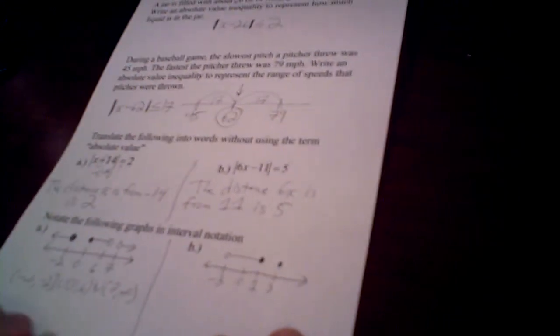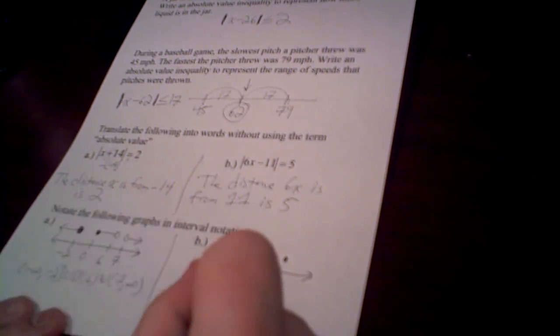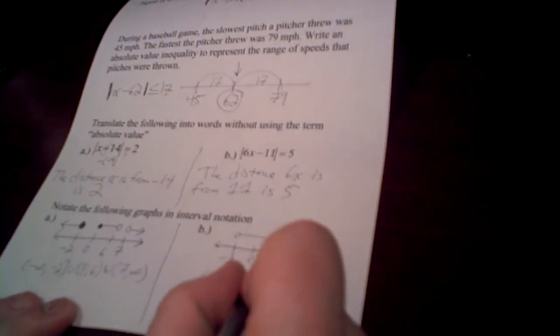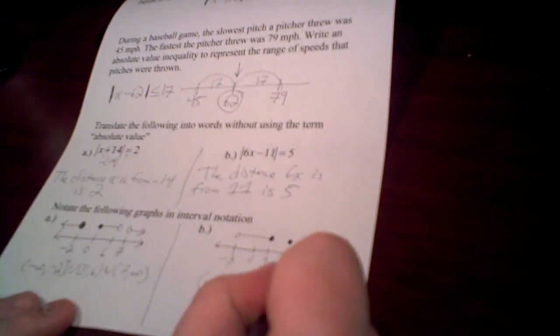On b, if we look, the smallest that it could be is negative 3, not including negative 3, up to 1. 1, including 1, so bracket. Then it hops, so union. Now, there's just 3. It's just a point of 3. So to represent that, I just put...